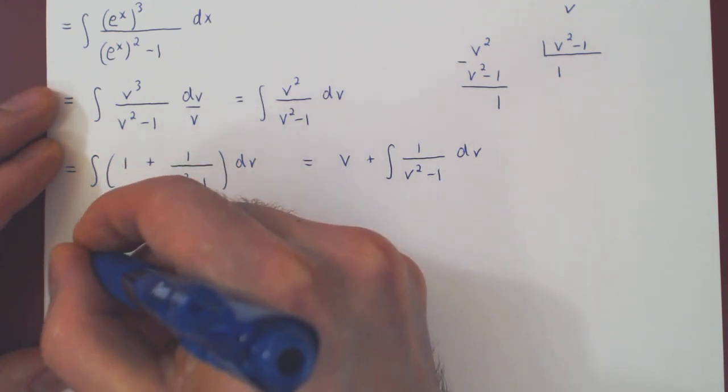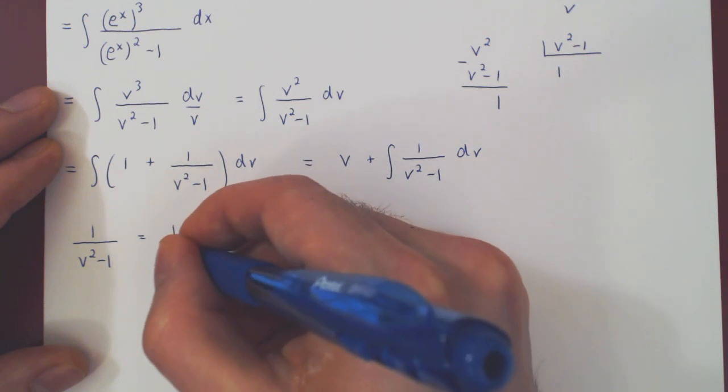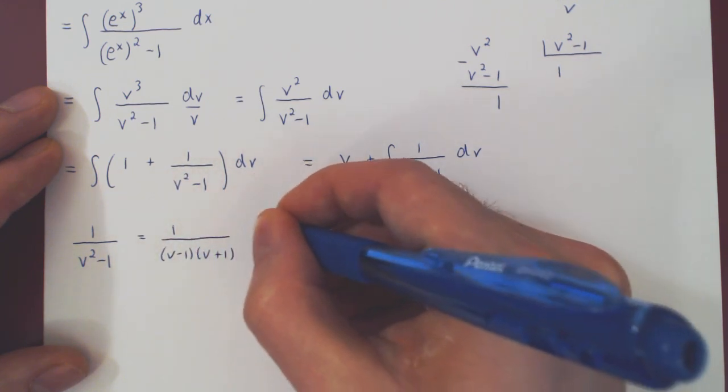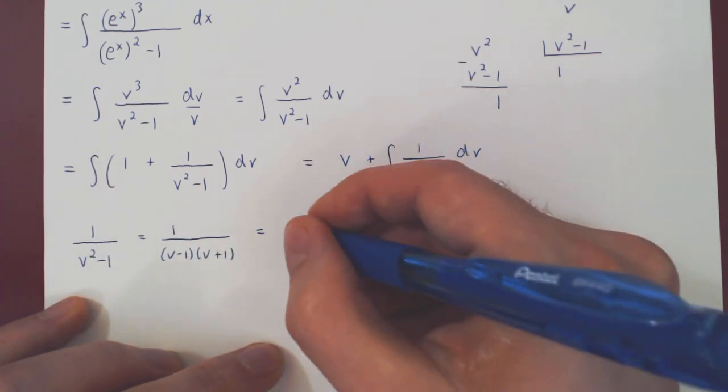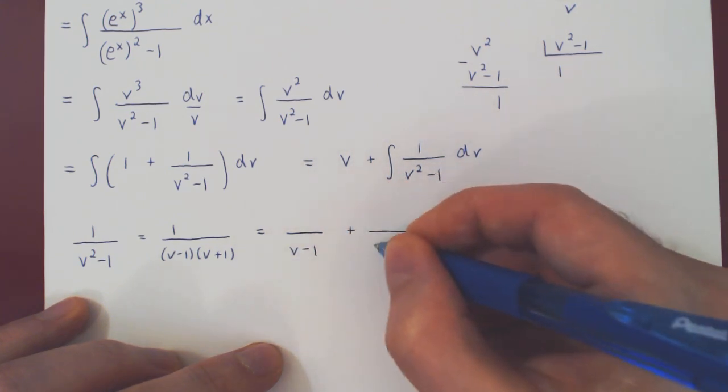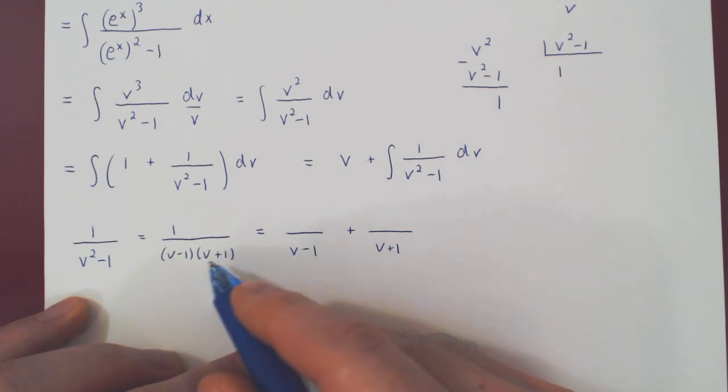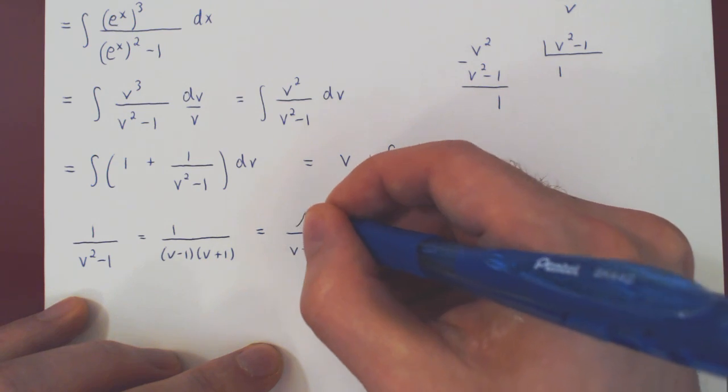So 1 over v squared minus 1 is 1 over v minus 1 times v plus 1, which equals. Both have a power of 1, so they will yield a single partial fraction, over v minus 1 and over v plus 1. As both factors are linear factors, both numerators are constants, so A, B.